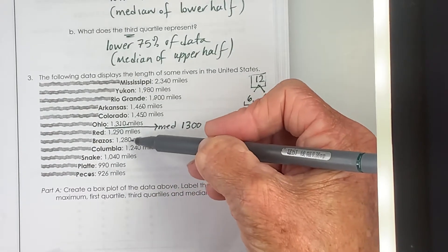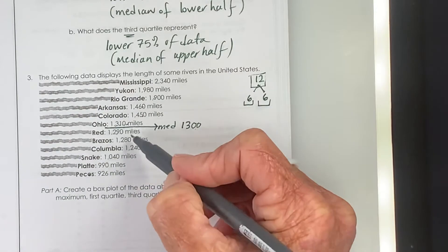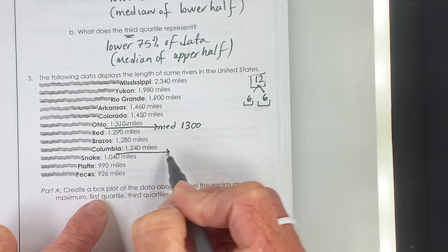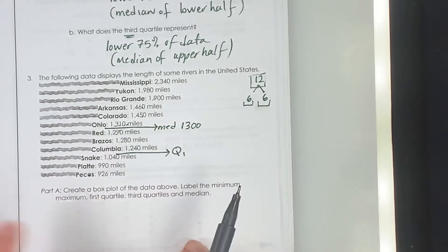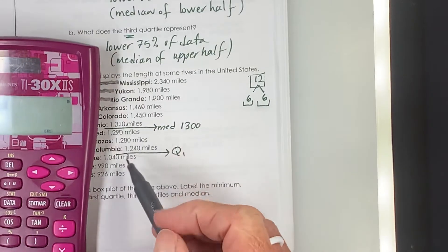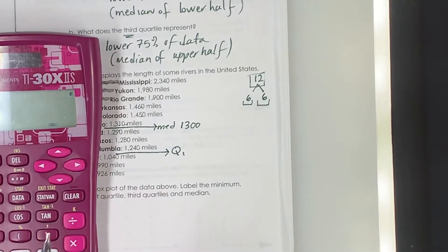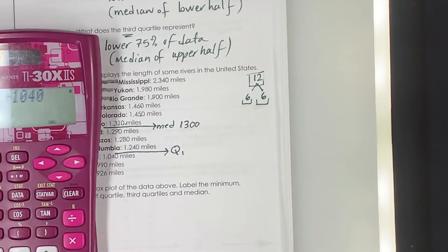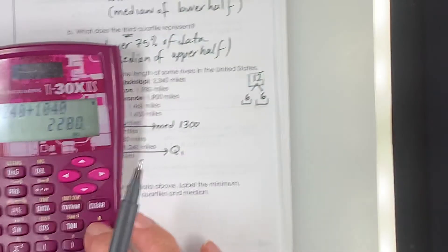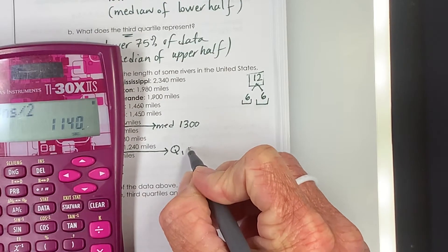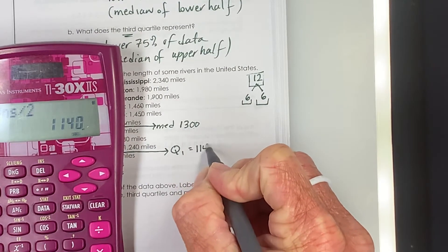Now I have six numbers in my lower half. So if I come in three from each end, exactly halfway in between them will be our Q1. So we need to average these two numbers. We have 1,240 and 1,040. We get 2,280, which we're going to cut in half. So Q1 is 1,140.